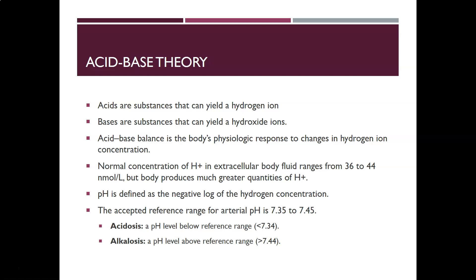The normal concentration of hydrogen ions in extracellular body fluid ranges from 36 to 44 nanomoles per liter, but the body produces much greater quantities of hydrogen ions through various metabolic processes. pH is defined as the negative log of the hydrogen ion concentration, and so pH and hydrogen ion concentration are in an inverse relationship — when one goes up the other goes down. A high pH has a low hydrogen ion concentration, and a low pH has a high hydrogen ion concentration.